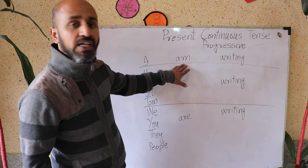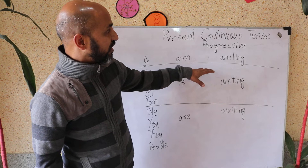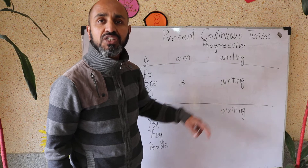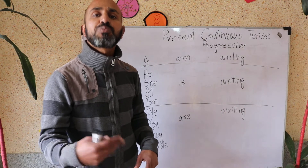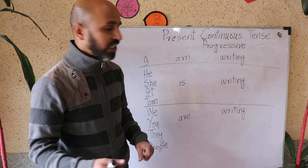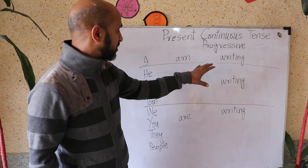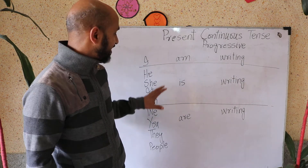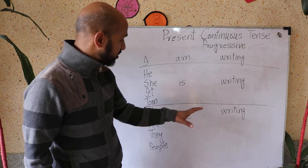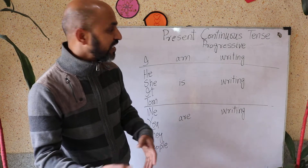With 'I' we normally use 'am' as the helping verb. In progressive tenses we normally use the -ing form of the verb, which is also called the present participle form. For example: I am writing, he is writing, she is writing, it is writing, Tom is writing, we are writing, you are writing, they are writing, and people are writing.